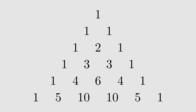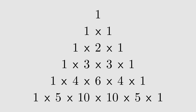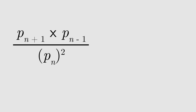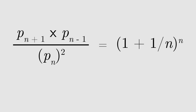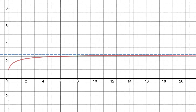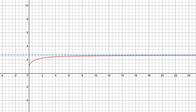To find e in Pascal's triangle, we look at the product of the numbers in each row, denoted by p sub n. Looking at the nth row, multiply the row products of the two neighboring rows together, then divide by the square of the current row product. Remarkably, this expression simplifies to (1 + 1/n) to the n. It is well known from calculus that this approaches e as n approaches infinity.